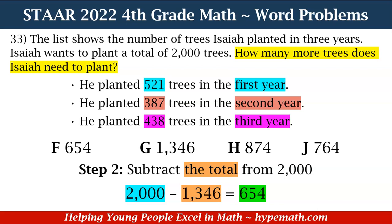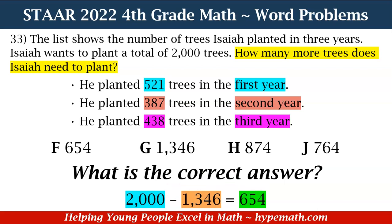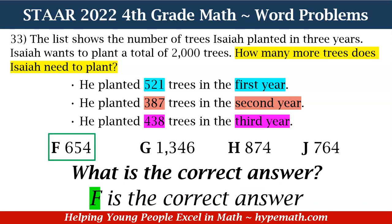Now that we have our answer and we've completed both step one and step two, what is our correct answer? All we need to do is look at our answer choices to see which one has 654 as the value. Yes, F is the correct answer. Great job, fourth graders. Let's move to question number 34.